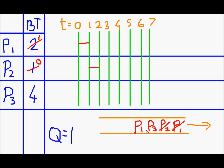Next is P3's turn. P3 will be executed for one quantum of time and its remaining burst time will be 3. It will join the queue at the back.